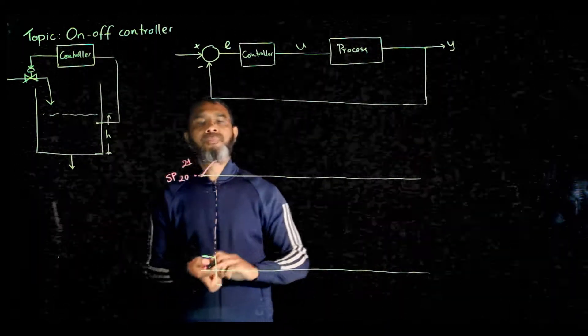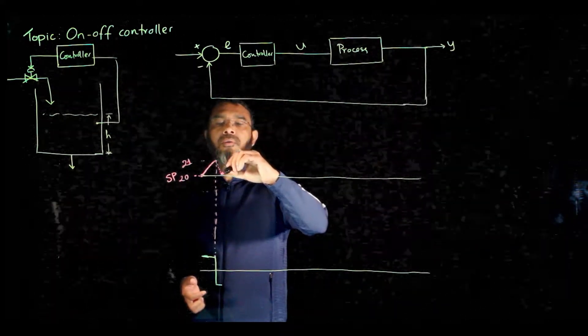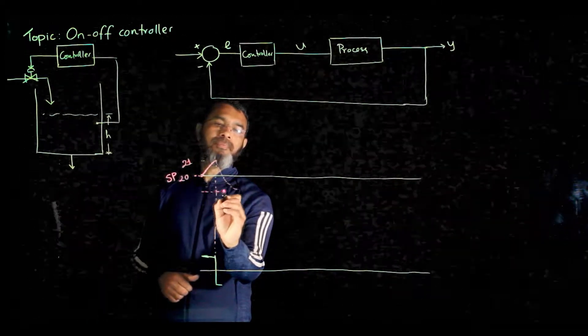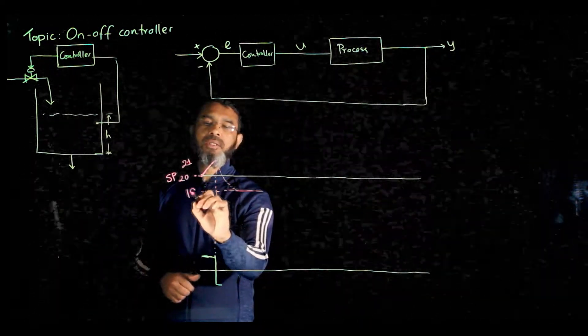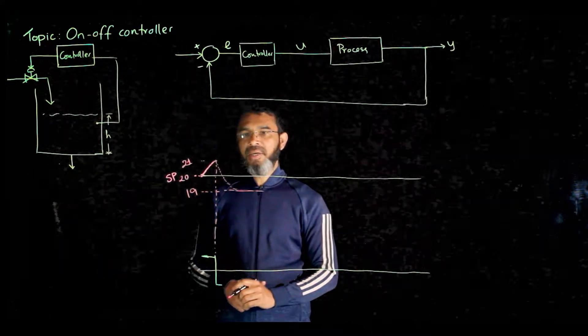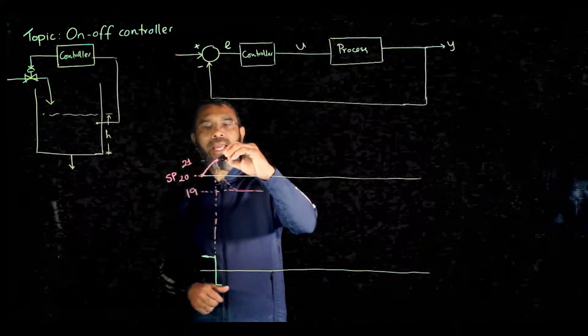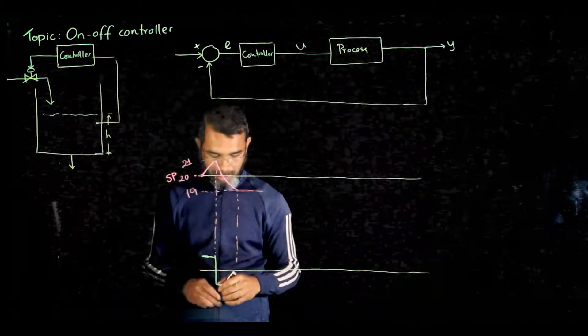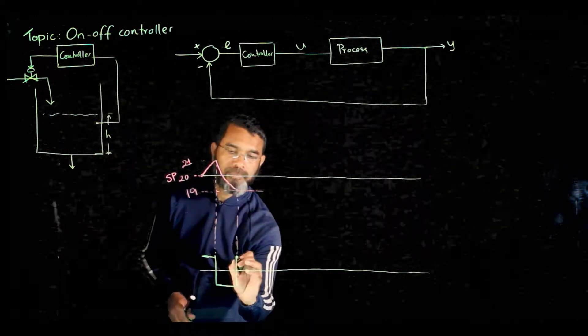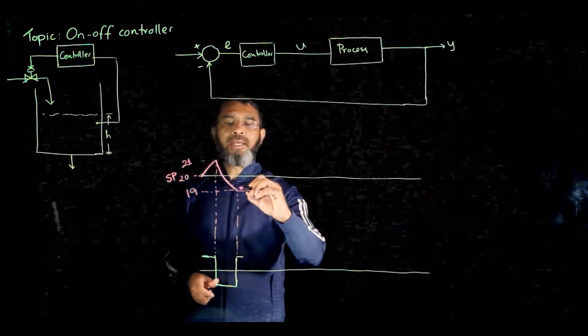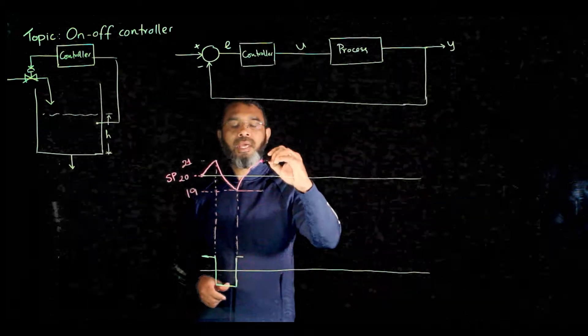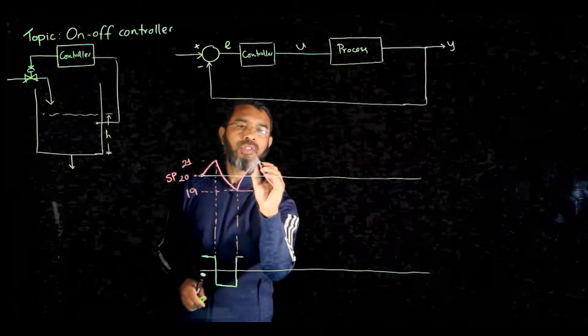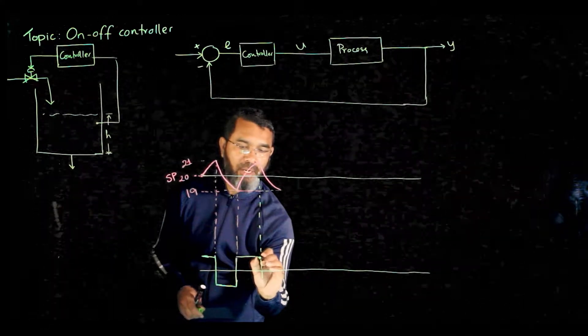Now when the level starts to drop, at what point do you want the valve to turn on again? Suppose you have a tolerance level here, so when it goes to 19 you want the valve to turn on again. So the level comes here and at this point you want the valve to turn on again. So the valve will turn on, and when it turns on the level will go up again, and it will come down. So it has some oscillation in the level itself - the valve will keep on turning on and turning off.